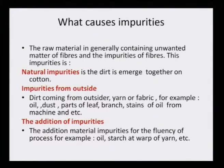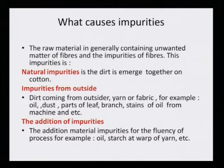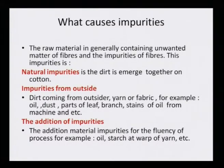What causes impurities? The raw material generally contains unwanted matter and impurities. These include natural impurities — dirt that emerges together in the cotton and other fibers when they are being woven — and impurities from outside, such as dirt from the yarn or the ore fabric: for example, oil, dust, parts of leaves, branches, and oil stains from the machine. When the fiber is being woven, there are many places where it is touching the ground and it is not always clean, so it is bound to take up dust and dirt from the vicinity.